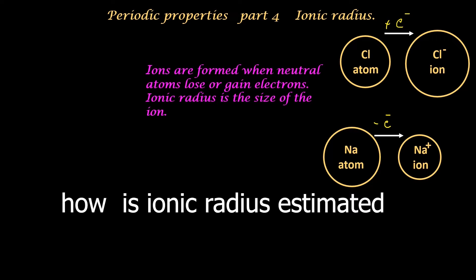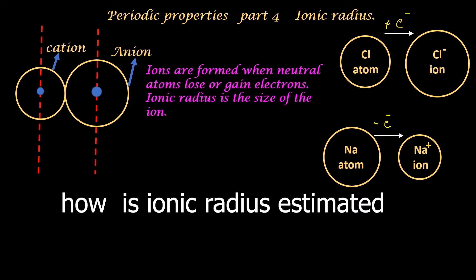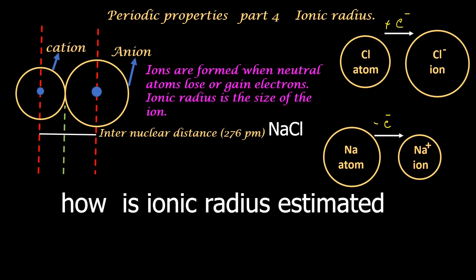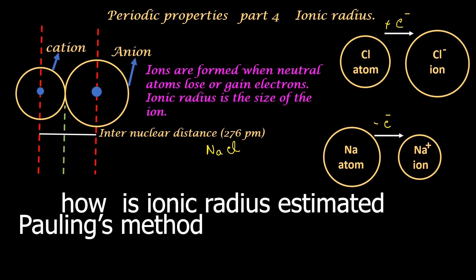How do we determine the ionic radius? In sodium chloride, the sodium ion and chloride ion remain close by, but their sizes are different. The internuclear distance between the cation and the anion can be determined, but unlike in covalent radius determination, half of this distance does not give the ionic radius because the cation is smaller than the anion. In sodium chloride, the internuclear distance between the two ions is 276 picometers. Unless the ionic radius of one of the ions is known, the ionic radius of the other cannot be determined. Several methods are used by scientists to find the absolute ionic radius.